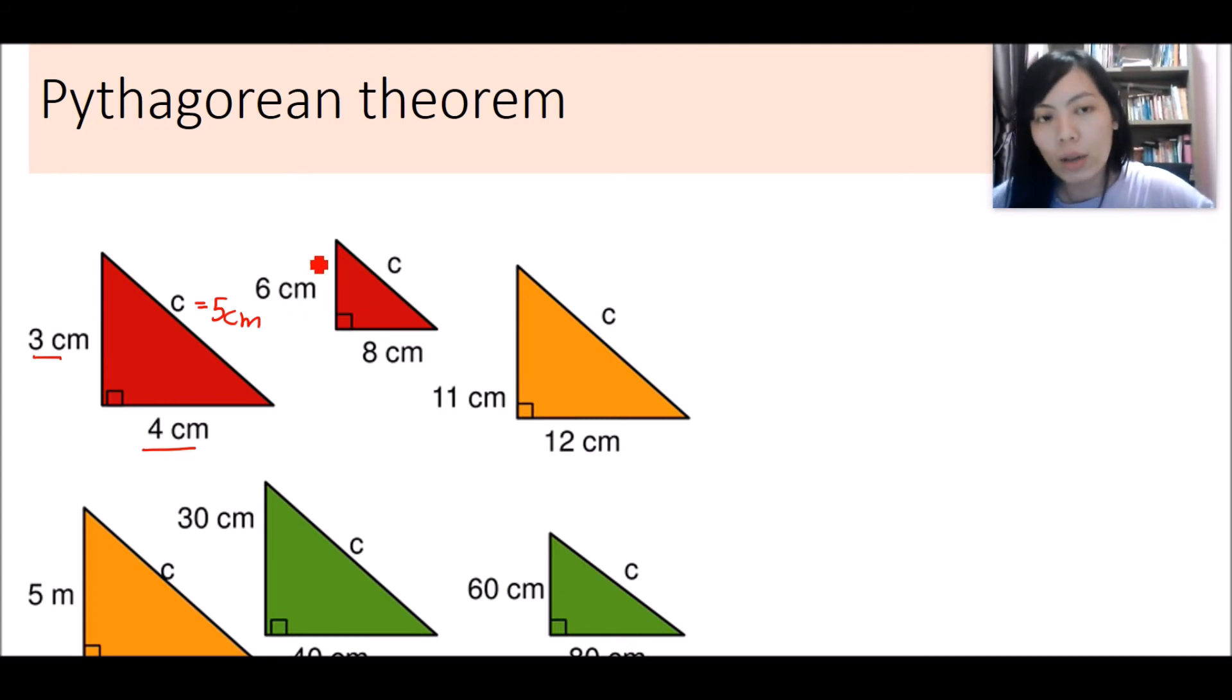How about this? Although this triangle is slightly smaller, it does not fit the ratio, especially when 3 cm is here. But what we want to highlight here is the ratio, the number. So what is the length of c?